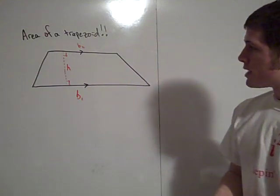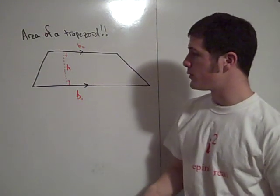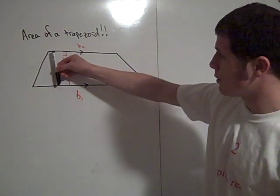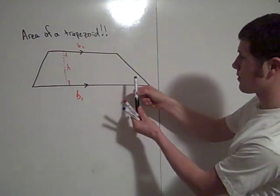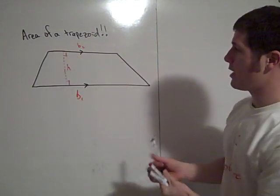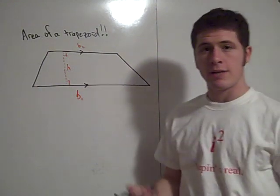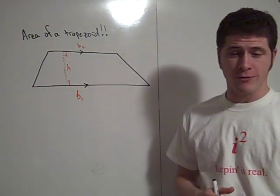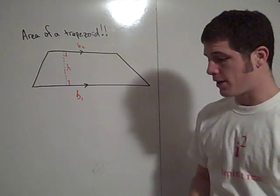You can split the trapezoid into two triangles, namely this triangle, this triangle, and then a rectangle in the center. And if you can find the area of a rectangle and you can find the area of a triangle, then you're good to go.